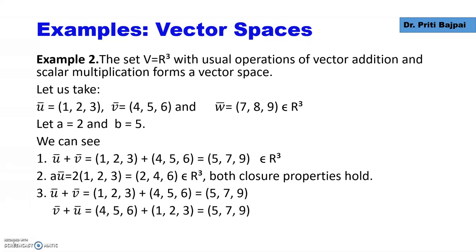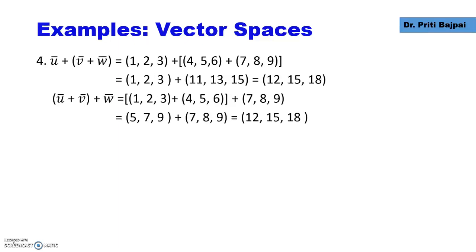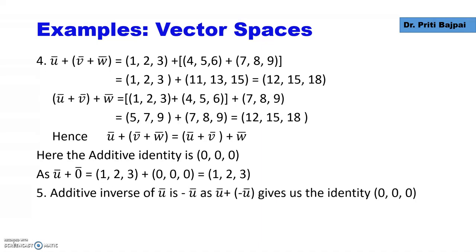Let's check the commutative law: U+V gives (5,7,9), and reversing the order, V+U also gives (5,7,9). For the associative law, in whatever order we add U, V, W, we get the same result (12, 15, 18). The additive identity is (0, 0, 0) — when we add it to U = (1,2,3), the point remains (1,2,3). The additive inverse of U is −U, because U + (−U) gives the identity (0, 0, 0).